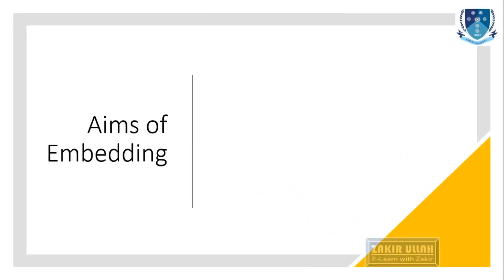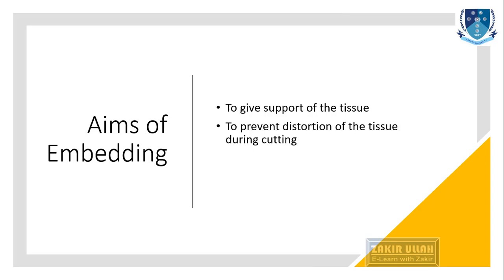The aims of embedding — the purpose of embedding — is to give support to the tissue, as the tissues are very delicate and very small. The embedding media supports the tissue in the processing. The second objective is to prevent the distortion and damaging of the tissue during the cutting process by microtome, as the microtome takes very minute portions from the tissue, during which the tissue may become distorted.